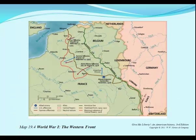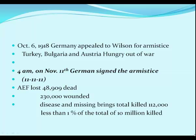Then the Allies attacked. On September 12th, 1918, 500,000 Americans and French drove the Germans from Saint-Mihiel. Two weeks later, 896,000 Americans were on the attack in the Argonne Forest. On October 6th, 1918, Germany appealed to Wilson for an armistice — Turkey, Bulgaria, and Austria-Hungary were already out of the war, and Russia too. At 4 a.m. on November 11th the Germans signed the armistice — 11/11 at 11 a.m. is the famous trivia. The American Expeditionary Force lost 112,000 killed, 230,000 wounded, with disease and missing bringing losses higher — but in reality less than one percent of the total 10 million killed.